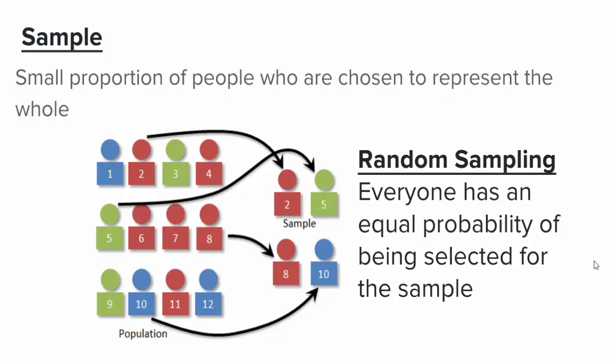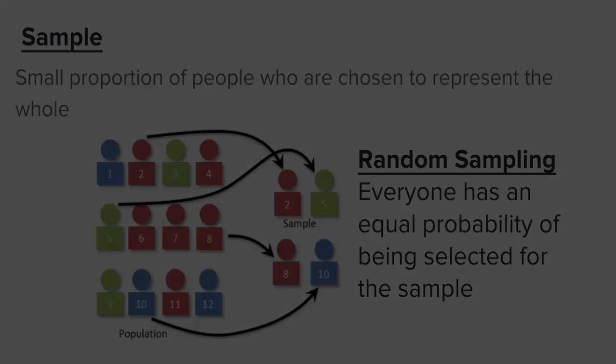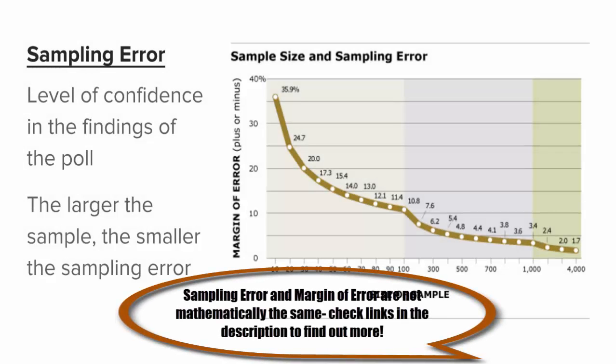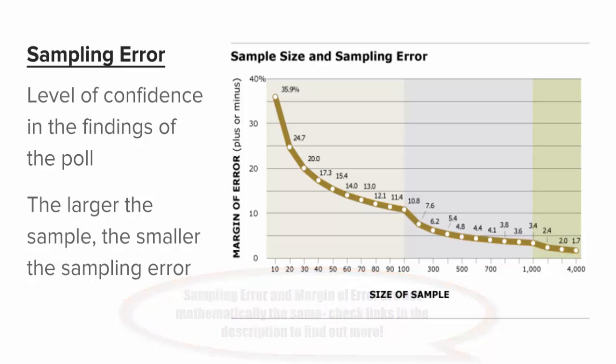In order to make certain these samples are accurate, pollsters engage in random sampling, where everyone in the larger group has an equal probability of being selected. If you are polling average Americans, every American should have an equal chance of being chosen. Because you are not polling everyone, there is going to be some sampling error — often called the margin of error — which is the level of confidence in the findings of the poll. The larger the sample, the smaller the sampling error, although there are other factors.